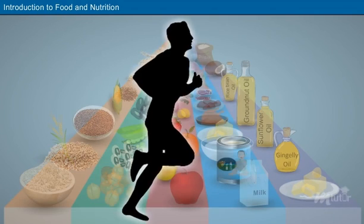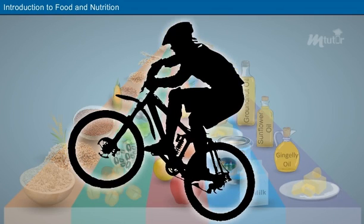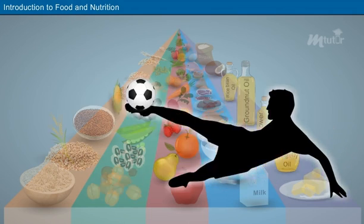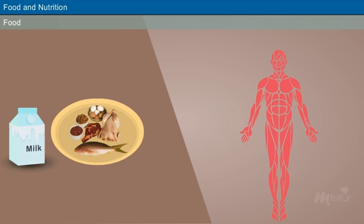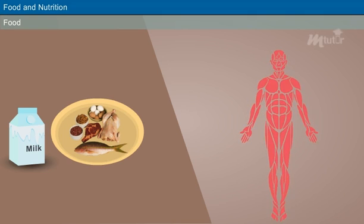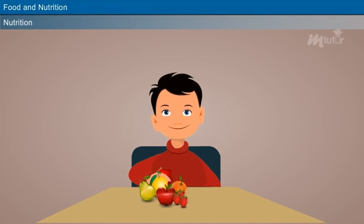One way of staying fit and healthy is to have an understanding of foods and the nutrients present in them. Hence, in this lesson we shall discuss all the important aspects of food and nutrition. Food is defined as a raw material which nourishes our body. The right amount of food with proper nutrients ensures good health.